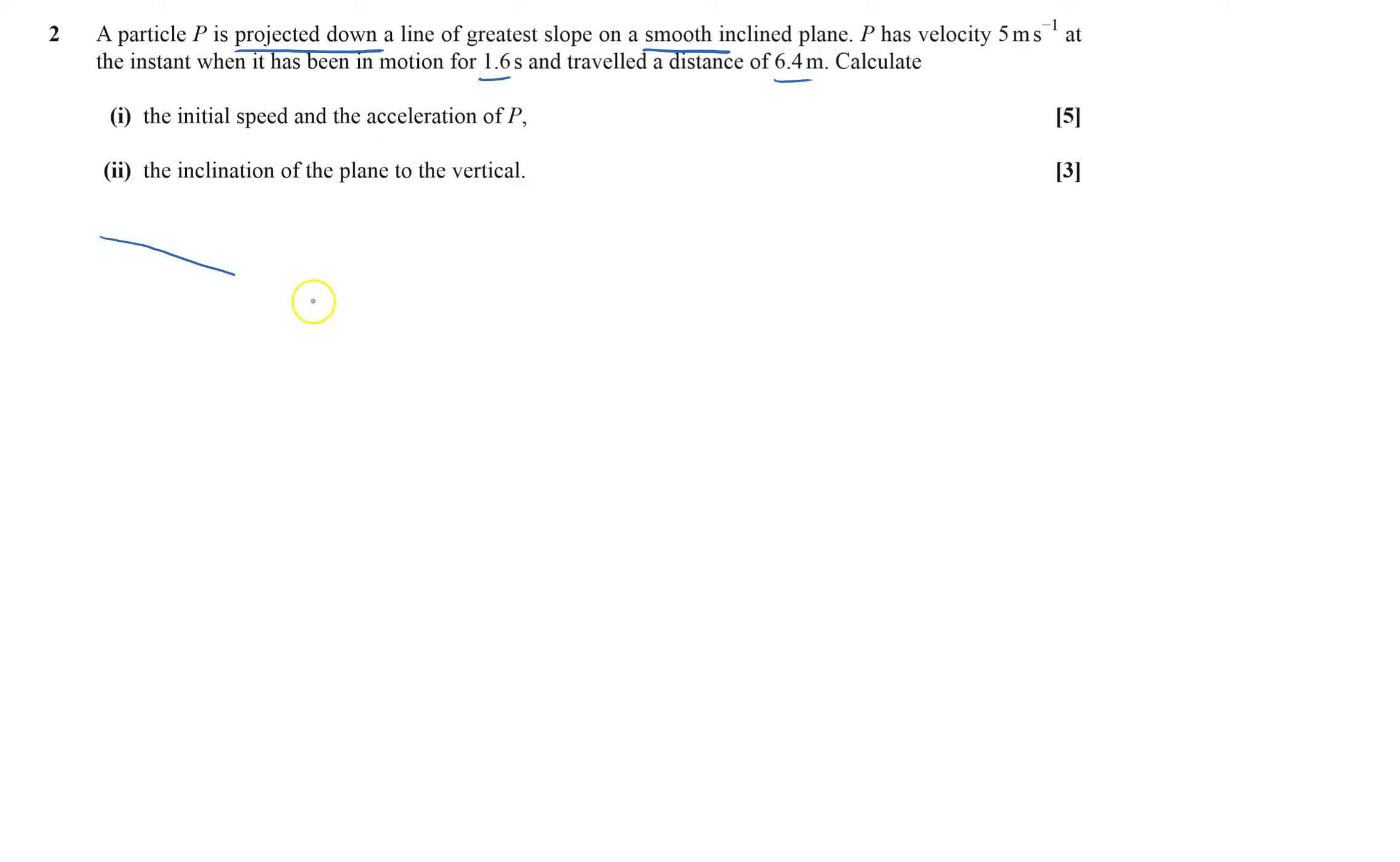Okay, so it's going down a smooth plane. It's been projected, so that means it will have initial speed u. Over the course of 6.4 meters, or indeed that is the same as 1.6 seconds, the speed at the end will be 5 meters per second.